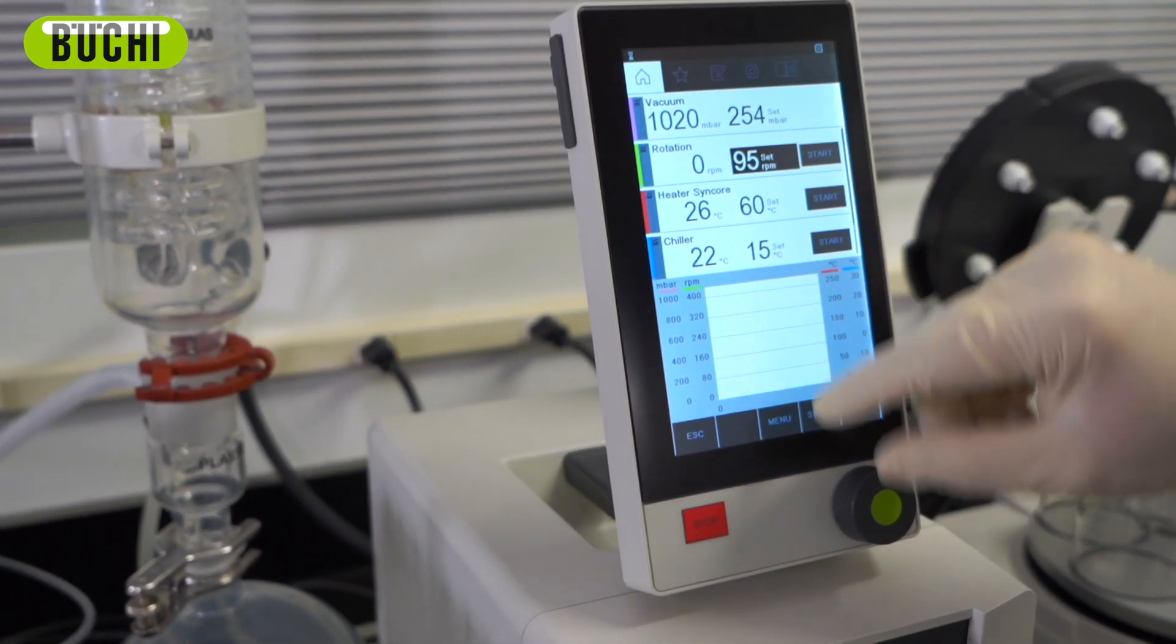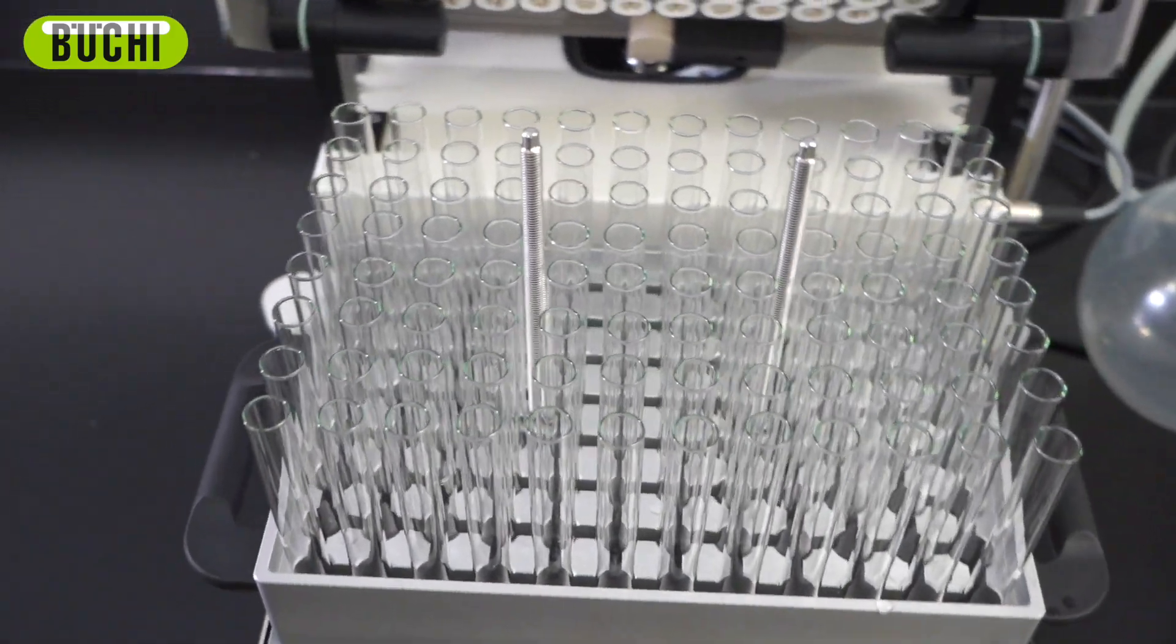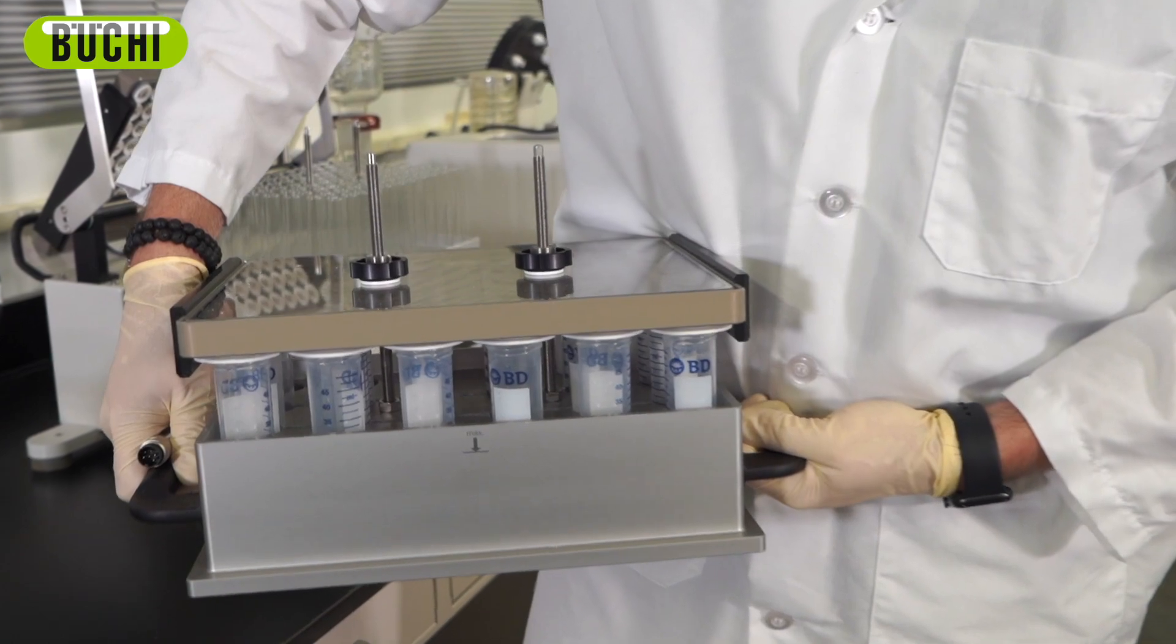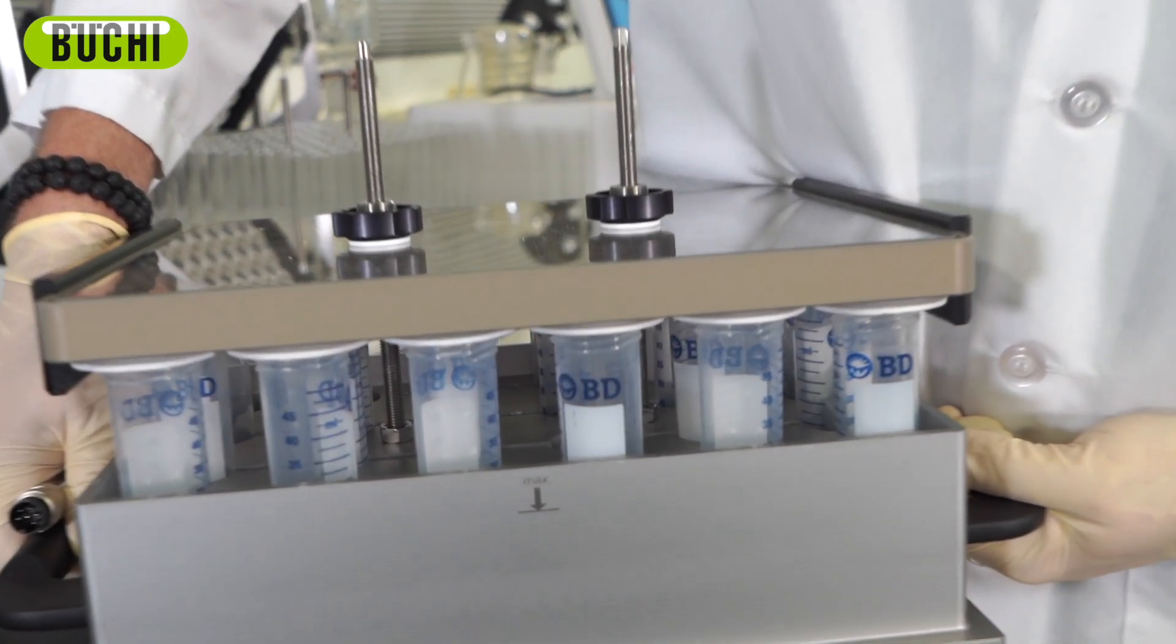The Polyvap comes in multiple position racks, from 4 samples to 96 samples at one time, emphasizing the unique versatility for high throughput labs. And, we can't forget to mention Buchi has racks that can fit your standard test tubes or falcon tubes.